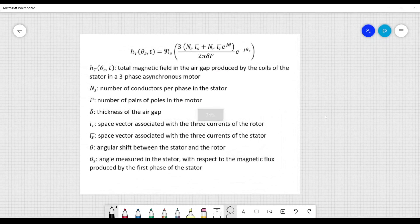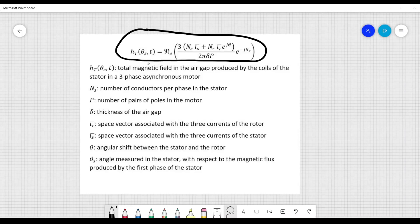Let me show you another example of why these motors are complicated. This expression here is the mathematical formula for the total magnetic field that we have in a three-phase asynchronous motor that we have in the air gap, and we will also talk about the air gap between the stator and the rotor. And this field is produced by the coils of the stator in a three-phase asynchronous motor.